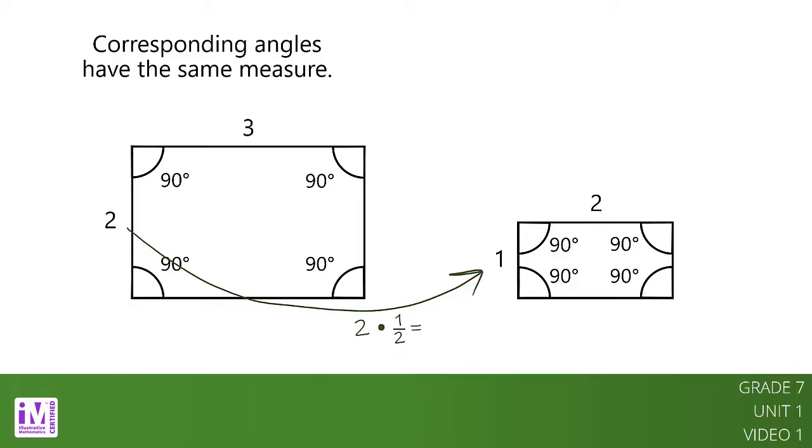2 times 1 half equals 1, but 3 times 2 thirds equals 2.